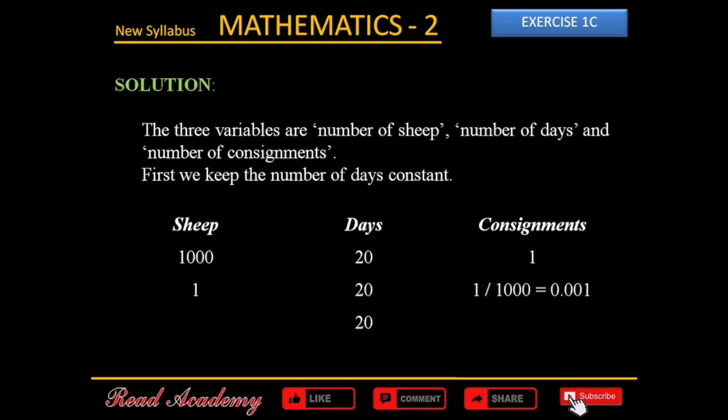Now we need to figure out the number of consignments needed to feed 550 sheep. Since the number of sheep has increased, we are going to need more fodder. Hence, we multiply 0.001 by 550, which gives us 0.55.